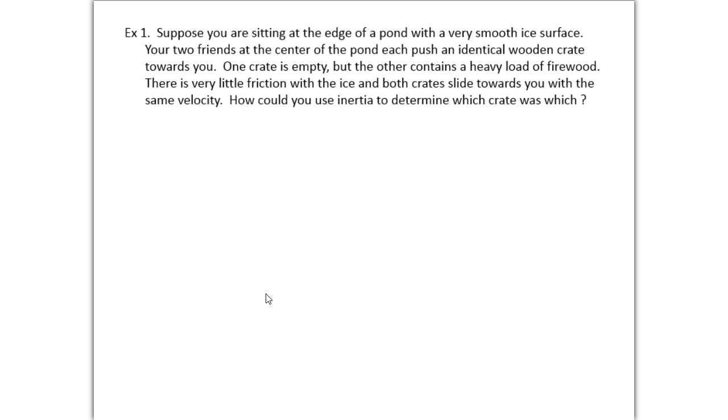So one example here to finish off this section. Suppose you're sitting on the edge of a pond with a very smooth surface. Your two friends are at the center of the pond, each push identical wooden crates towards you. One crate is empty, but the other one contains a heavy load of firewood. There's very little friction on the ice surface, and both crates slide towards you with the same velocity. How could you use inertia to determine which crate was which? So how would you know which of the two crates was empty, and which was full of firewood? So go back, take a look at the other slides. There's a reference there, and I've said it a couple times, to velocity and mass. And we'll talk about this question when we get back in class on Monday.